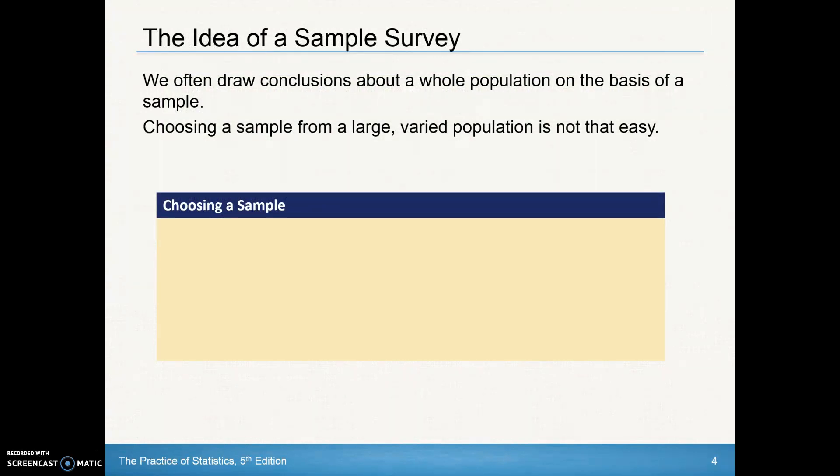So the idea of a sample survey is that we often draw conclusions about a whole population on the basis of that sample. You're seeing that now with election polling. Election polling doesn't ask everybody in the population, but they do a very strategic sample so they can draw conclusions about what the whole population will do. Choosing that sample from a large, varied population is not that easy.